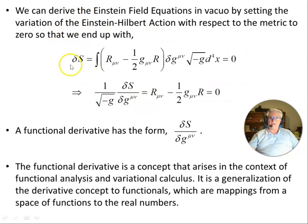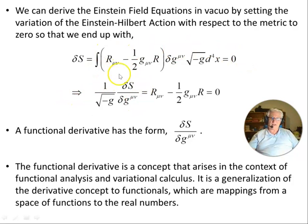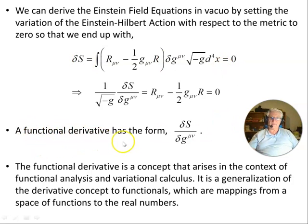This derivation is covered in a series on the variational approach to general relativity — I've just taken it straight from there, so have a look at that. What I want to do in this video is get at the idea of a functional and of this object here, which is the functional derivative. We can derive the Einstein field equation in vacuo by setting the variation of the Einstein-Hilbert action with respect to the metric to zero, ending up with this object here, a functional derivative of this form, using the deltas.